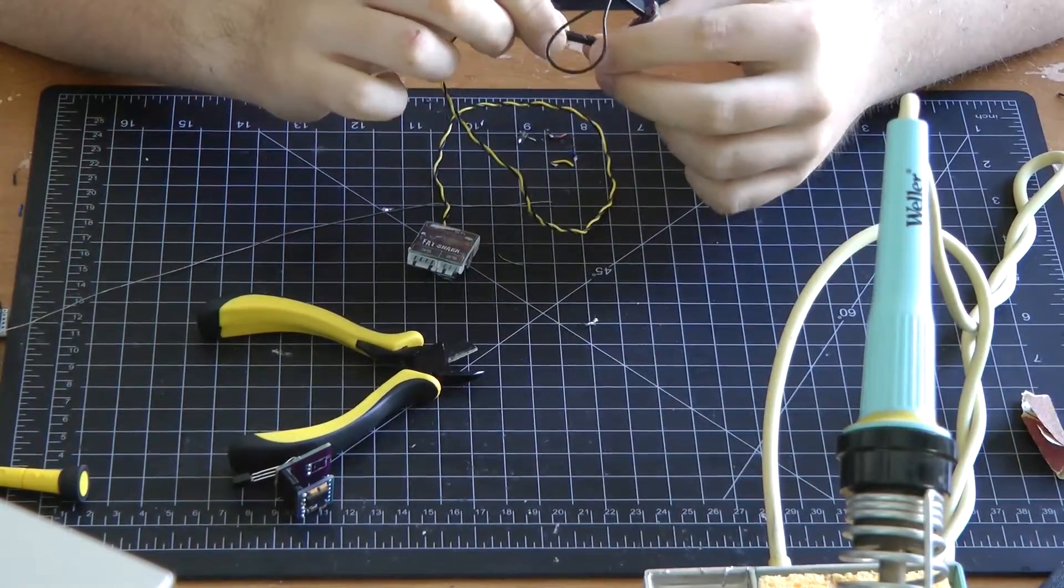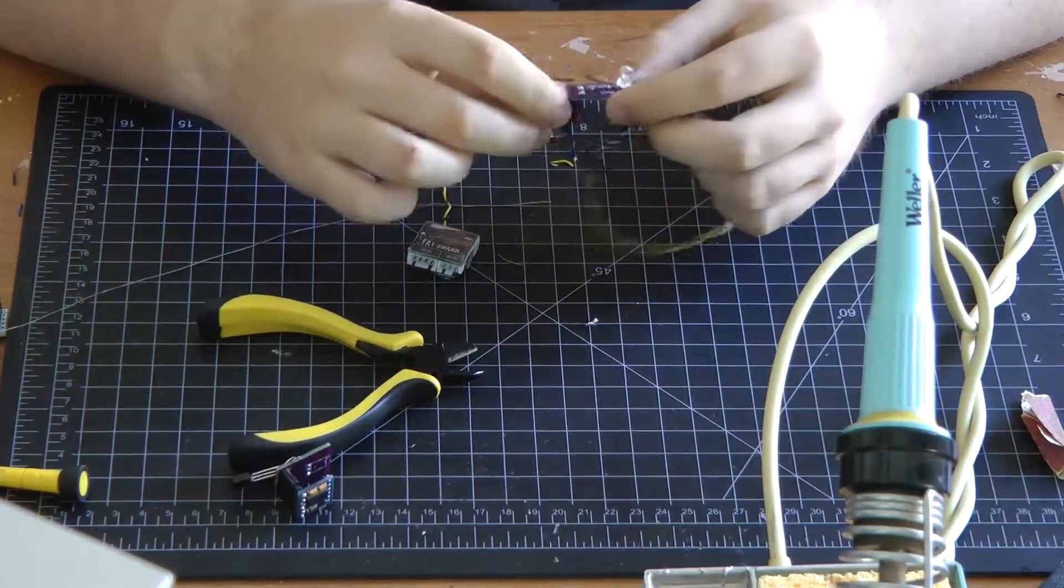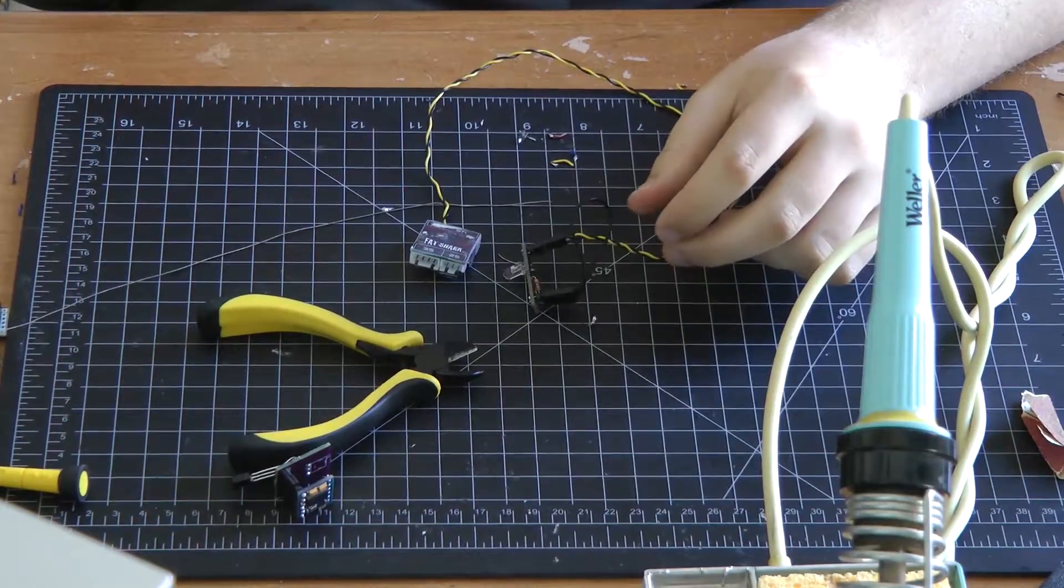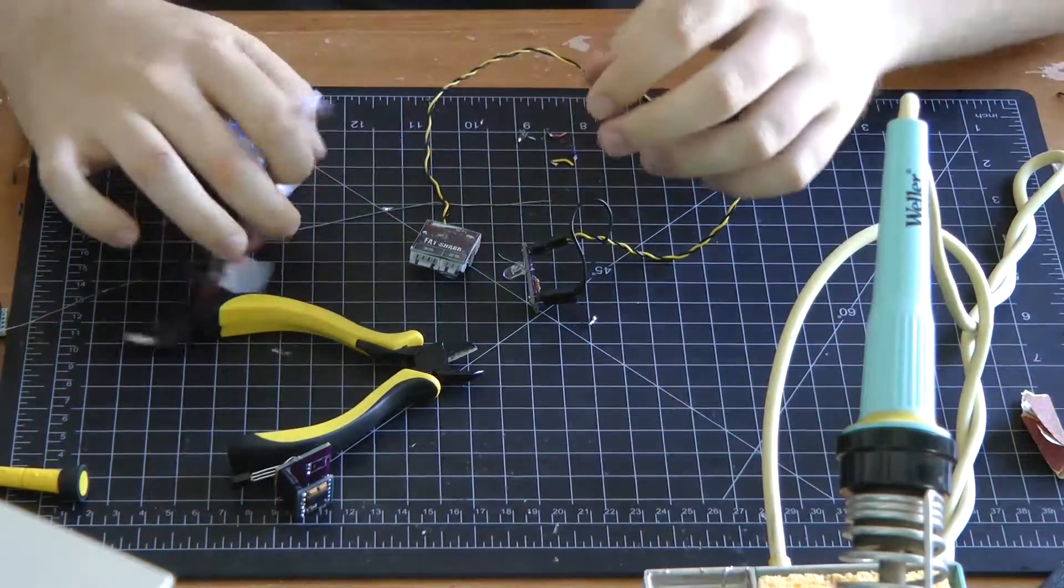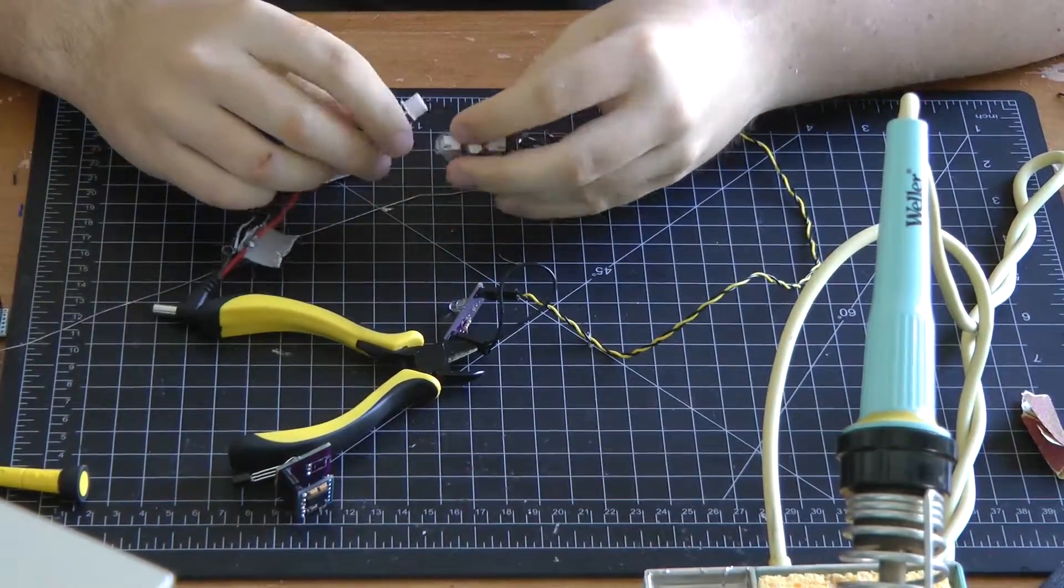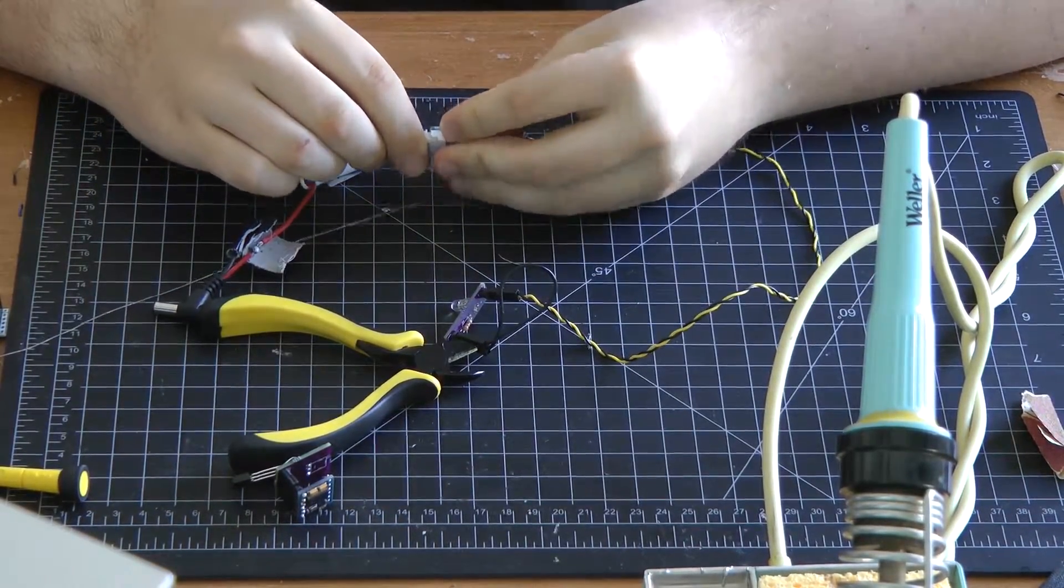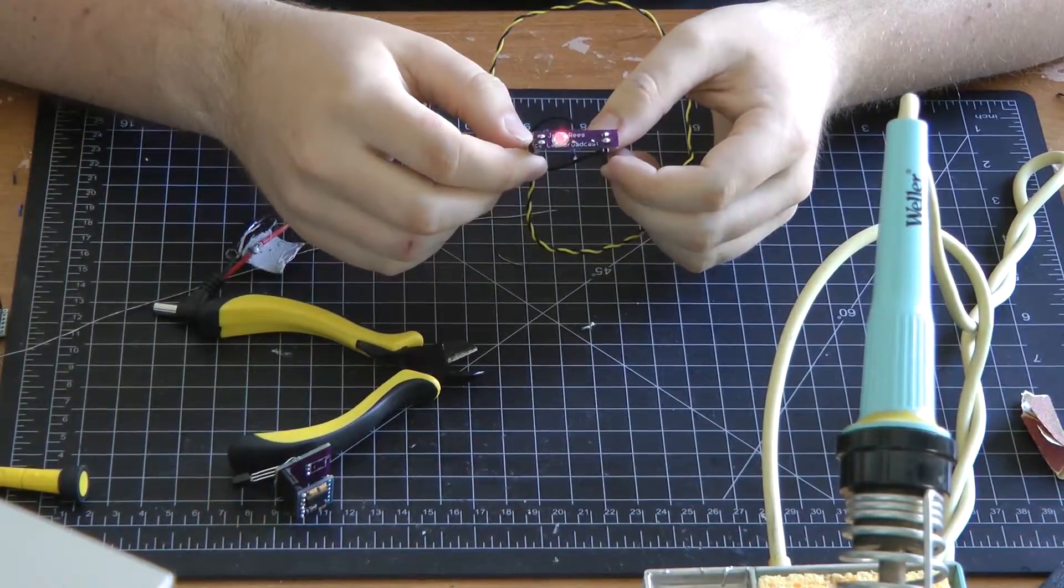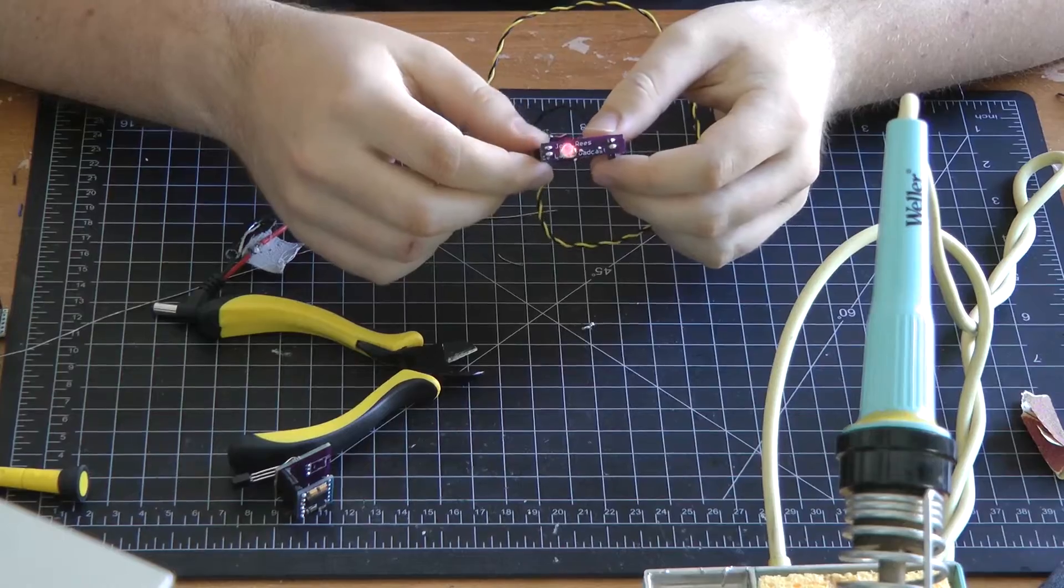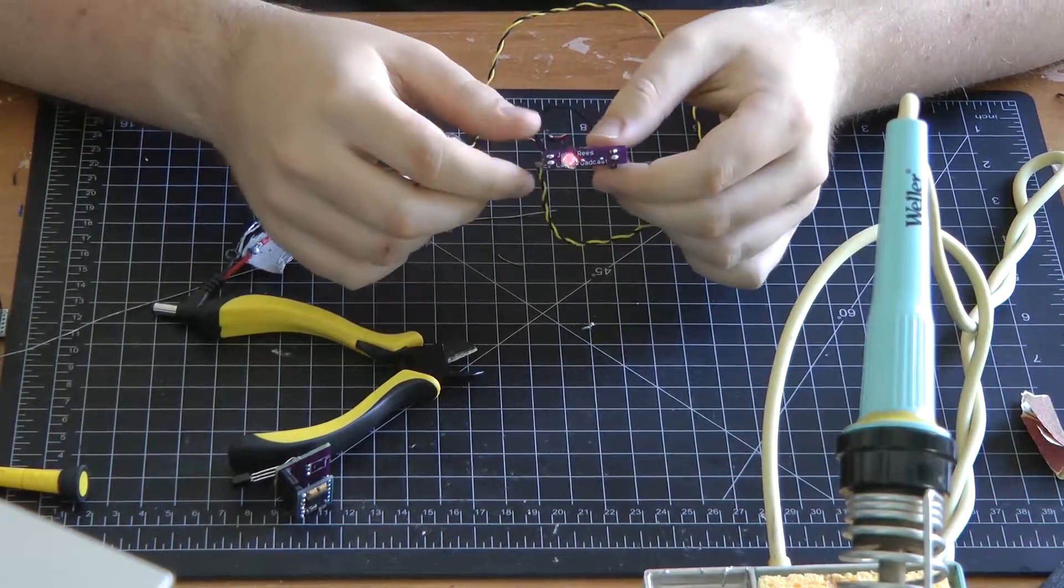And it does not matter what way that you plug it in - well, it does - because it won't work one way, but it's not like a mini quad where it will blow up. Just grab a dead two cell. Hopefully it'll have enough voltage to pump through. Plug it into the two cell port, and if it is correct, you're going to see a little bit of light coming out of it.